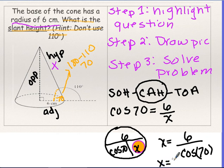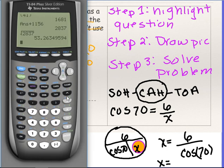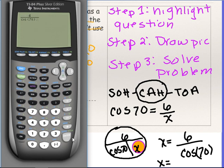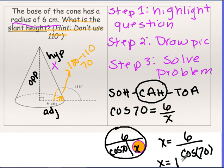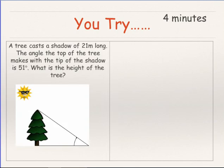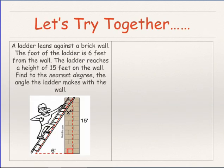In the calculator I get 6 divided by cosine of 70, which is about 17.5. Rounding to the nearest whole number gives 18. So the slant height is 18 centimeters. Go ahead and knock out the next couple of questions on your own.